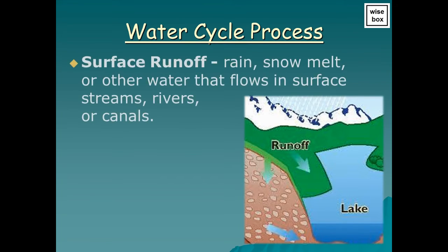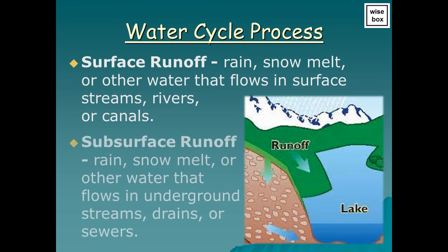Surface runoff comes from rain, snow melt, or other forms of water that flows in surface streams, rivers, or canals. Subsurface runoff comes from rain, snow melt, or other water that flows in underground streams, drains, or sewers.